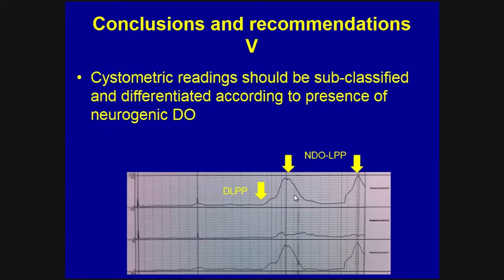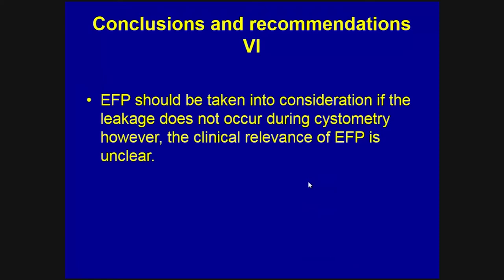I would like to show an example of a urodynamic study to clarify the difference between DLPP and neurogenic detrusor overactivity-associated DLPP. This is the DLPP according to the ICS definition when there is no increase in vesical or abdominal pressure. However, when a neurogenic detrusor overactivity episode occurs and leakage follows, that has unfortunately been reported as DLPP in many examples. It is not DLPP — we must differentiate between these two phenomena. End-filling pressure should be noted if leakage does not occur during cystometry, though the clinical relevance of end-filling pressure is not yet clear.